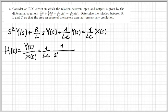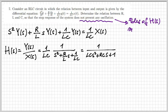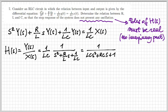H(s), the Laplace transform of the impulse response — also called the system response — is obtained as Y(s) divided by X(s), a ratio of polynomials. In this case we find it compactly as 1 over LC·s² + RC·s + 1. For the system not to present any oscillation, the poles — the roots of the denominator of H(s) — must be real. They must have no imaginary part, because it is the imaginary part that causes oscillations in the response.